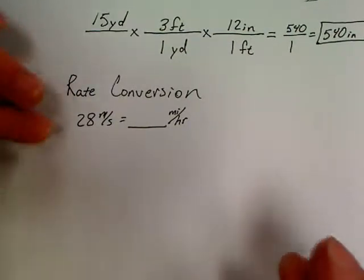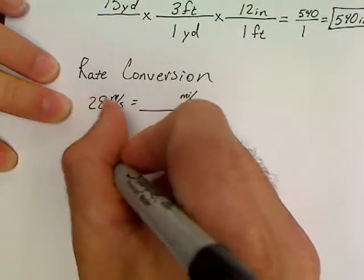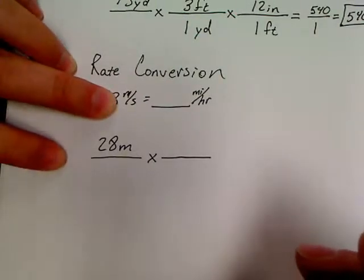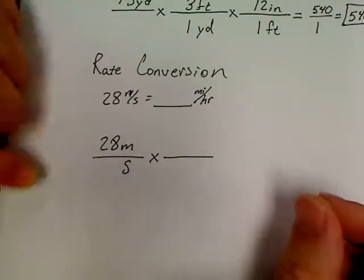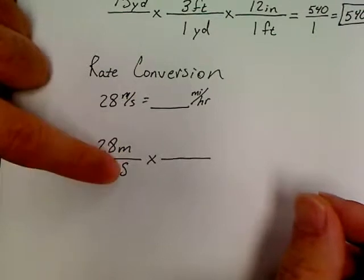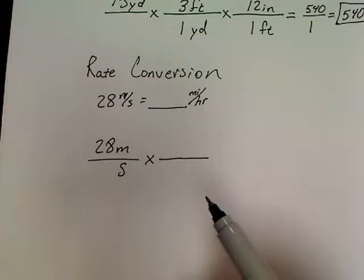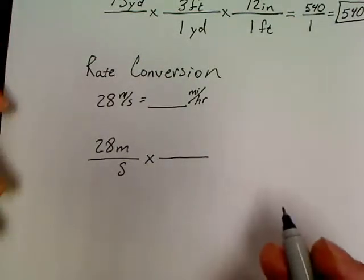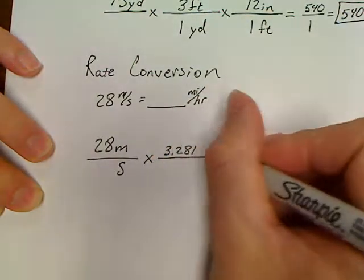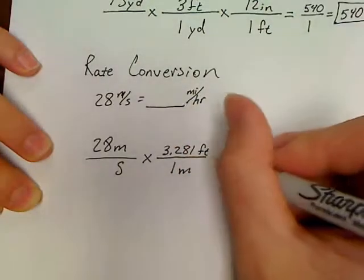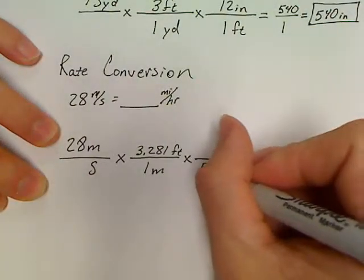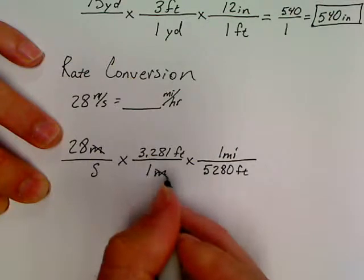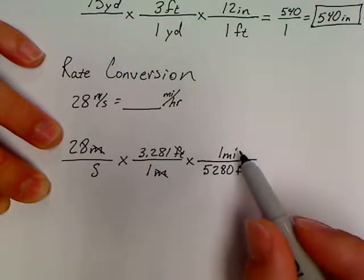Here's the big secret to doing a rate conversion problem. Write out 28 meters, draw your line, put your X, draw your line. The 'per second' just goes on the bottom of this first step, so 28 meters per second looks like 28 meters over seconds. Don't even worry about the seconds yet — just convert meters to miles. First, convert to feet: there are 3.281 feet per every one meter. Then, there are 5,280 feet for every one mile. Notice how the canceling works — meters cancel, feet cancel — so right now our answer would be in miles per second.